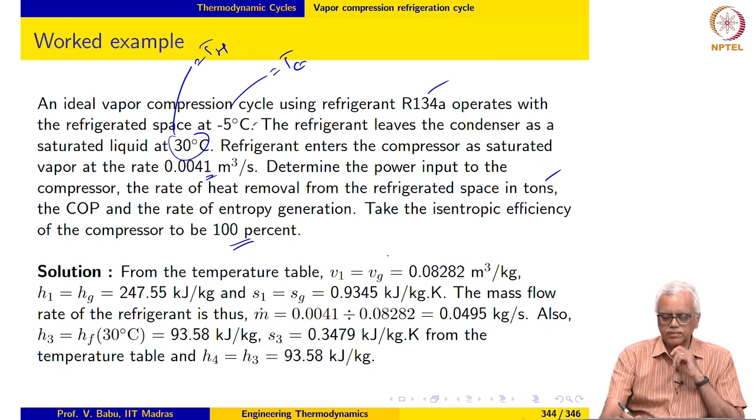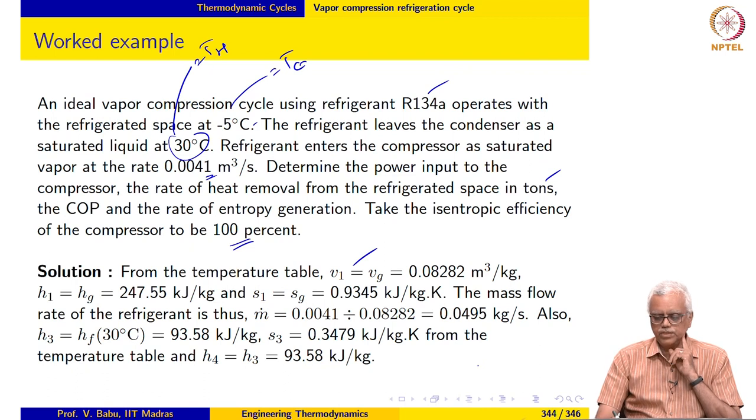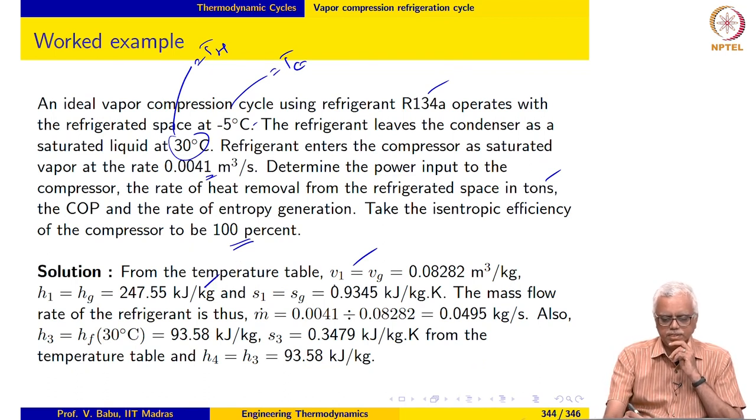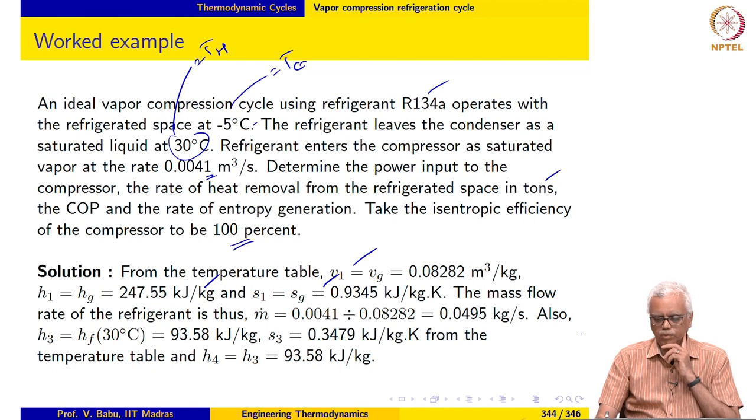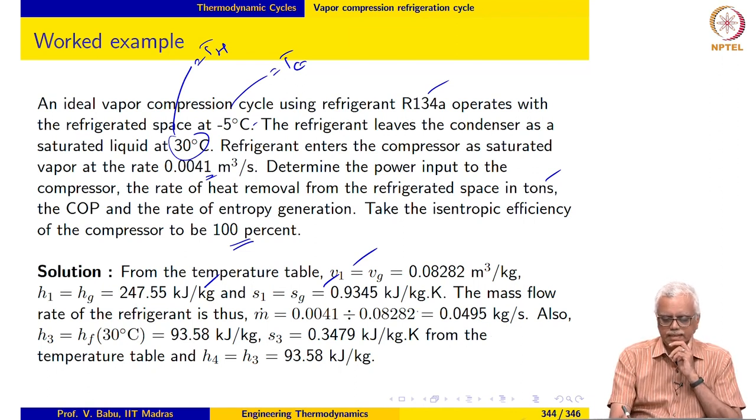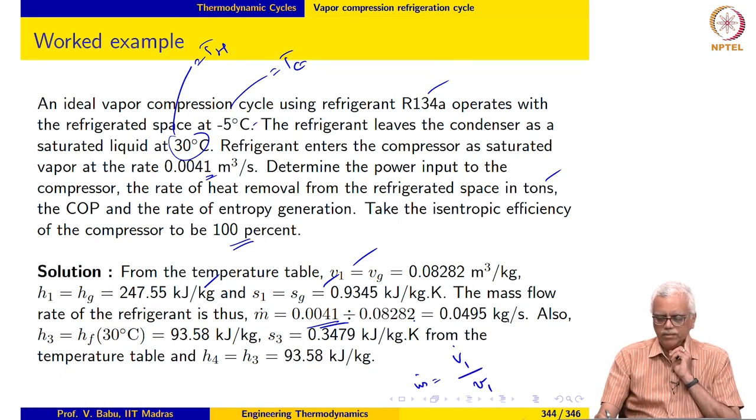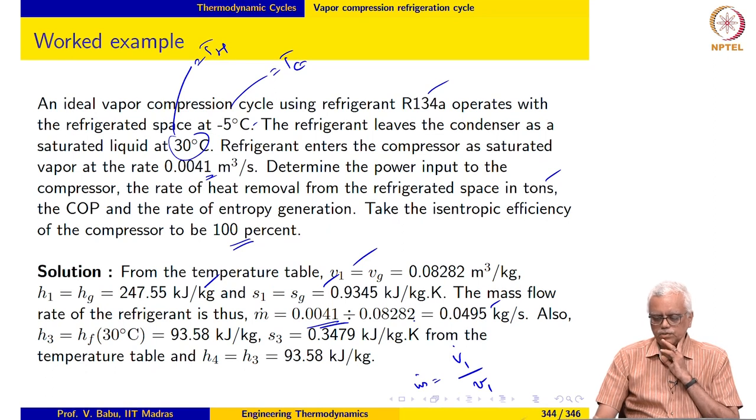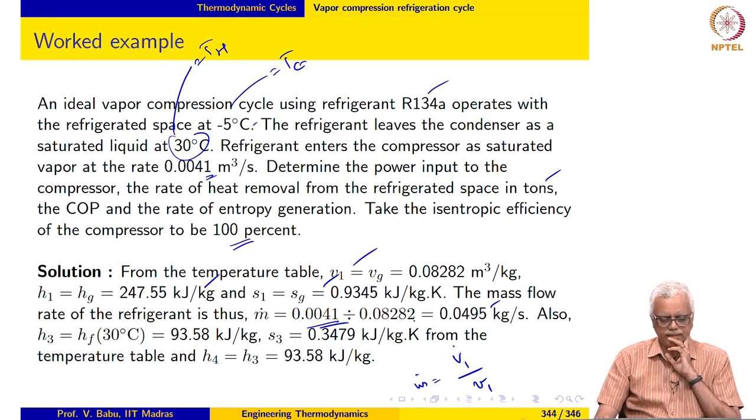From the temperature table corresponding to saturated vapor, we can pick up specific volume at state 1, specific enthalpy at state 1 and specific entropy at state 1. Now since the volume flow rate is given at inlet to the compressor, we can evaluate mass flow rate M dot. M dot is equal to V1 dot divided by V1. We may evaluate the mass flow rate as 0.0495 kilogram per second.